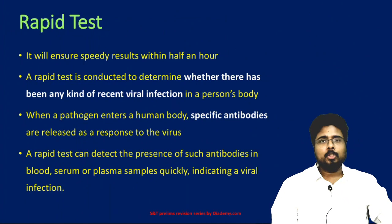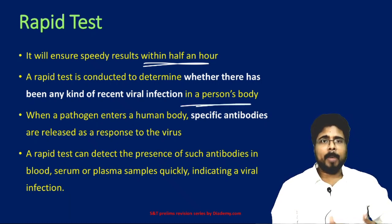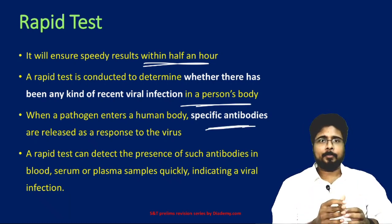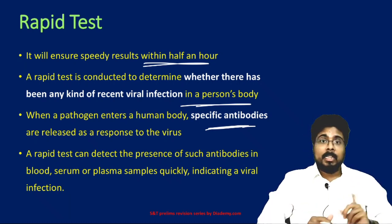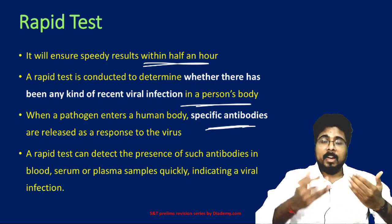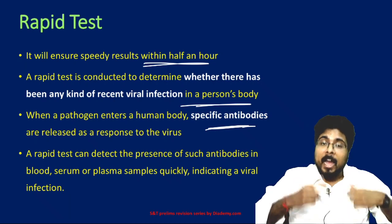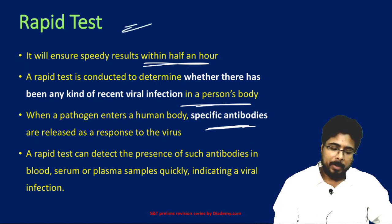Next, the rapid antibody test. It ensures speedy results within half an hour. This test determines whether there has been any recent viral infection in a person's body. When a pathogen infects a person, specific antibodies are produced. The rapid test checks for those antibodies in the blood, serum, or plasma samples. If antibodies are present, the person has either been infected and recovered. This helps determine how many people have been affected by the virus.